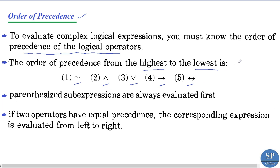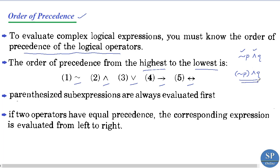For example, if we have the expression negation p conjunction q — that is the conjunction of negation-p and q — we have two operators: negation and conjunction. The order of precedence gives higher priority to negation, so we perform negation-p first and then perform the conjunction.